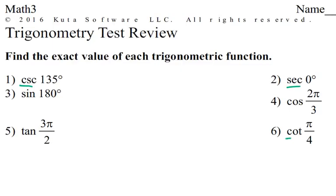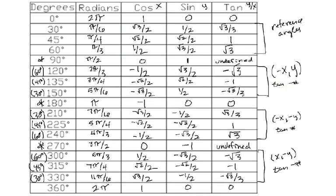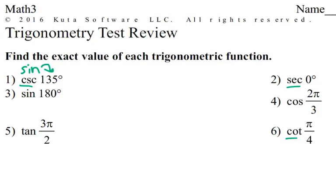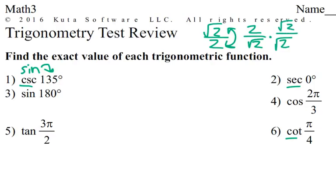When we're given reciprocal trig functions, we just flip it around. Cosecant is the reciprocal of sine. So, let's find the sine of 135. We go to 135 on our table — the sine is √2 over 2. So the cosecant will be the inverse of that: 2 over √2. We can't leave it like that, so we multiply by √2 on top and bottom. √2 times √2 is 2, giving us 2√2 over 2, which simplifies to √2.